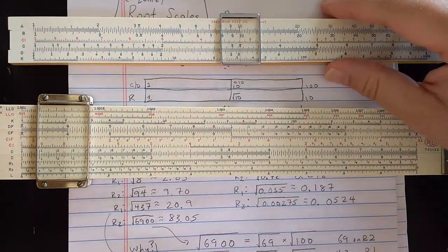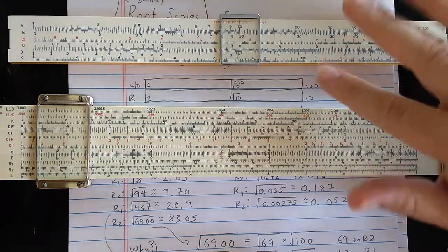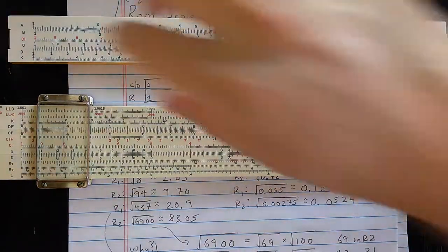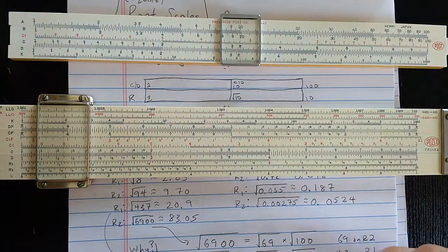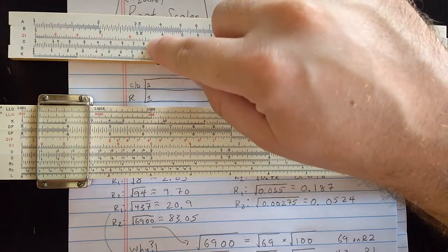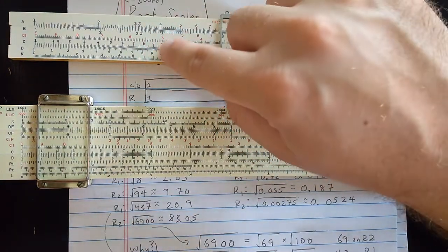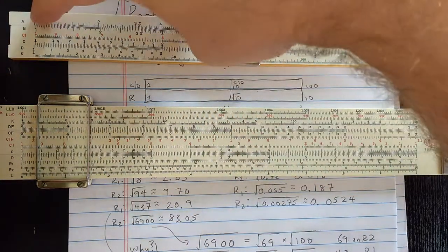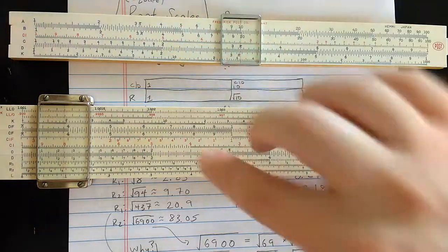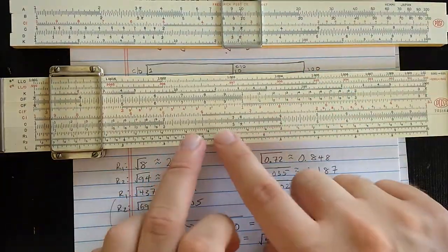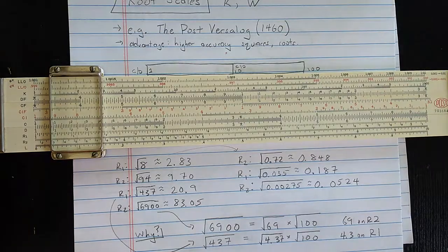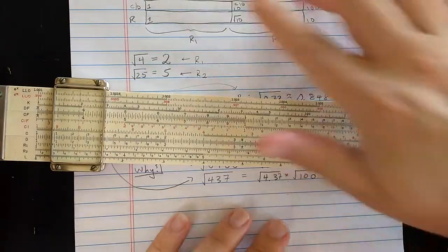And then R2 goes from that square root of 10 up to 10. So essentially they are kind of like reversing the relationship between C and D and A and B. They're actually going the opposite direction. Instead of being half as long, they're twice as long. So you need two of them to go through the entire range from 1 to 10.